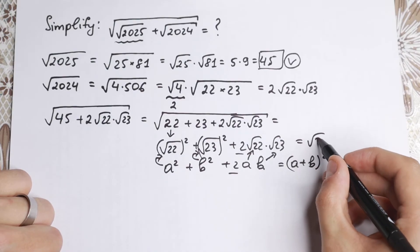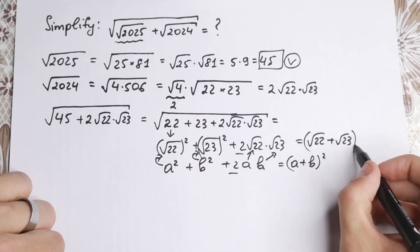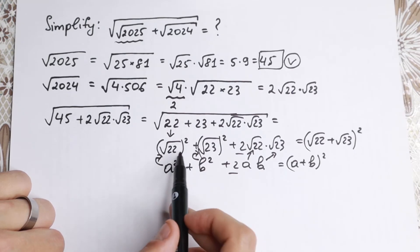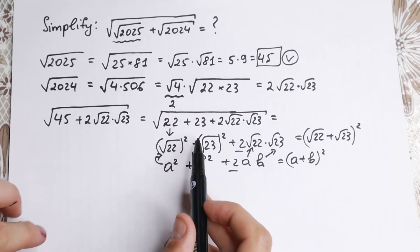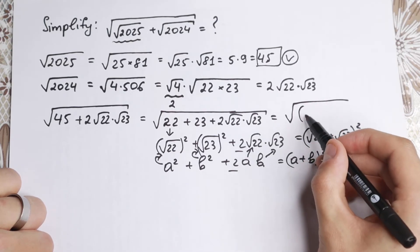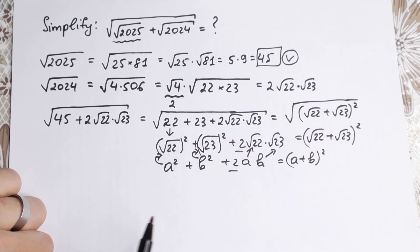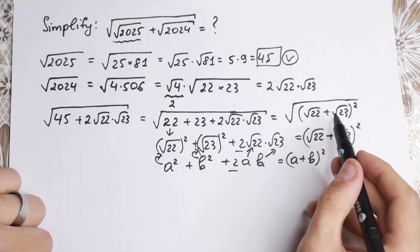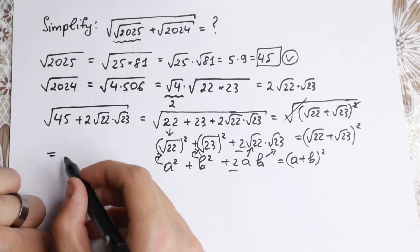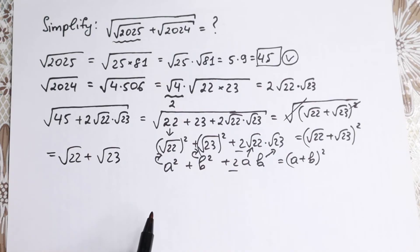So we have the square root of 22 plus the square root of 23, all squared. But remember we still have an outer square root sign, so inside that square root sign we have (the square root of 22 plus the square root of 23) squared. Since we have a square and a square root, we can cancel both signs, and as a result our answer is: the square root of 22 plus the square root of 23.